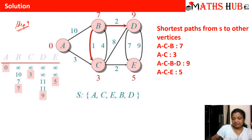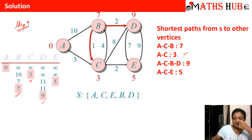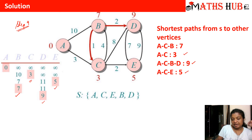Finally, we get the answers to all the shortest paths. For vertex B: shortest distance is 7 and the path is A to C, then C to B. For vertex C: shortest distance is 3 and the path is A to C. For vertex D: shortest distance is 9 and the path is A to C, C to B, then B to D. For vertex E: shortest distance is 5 and the path is A to C, then C to E.